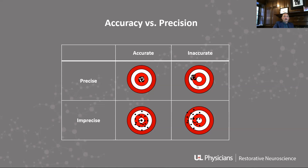You can also have precision without accuracy — you're always hitting the same spot, but your frame is bent, so you're always four millimeters to the left or some such thing. And the worst case is to have the scatter-shot combination of being both imprecise and inaccurate.